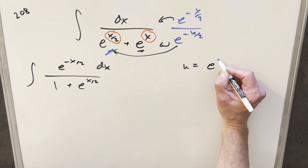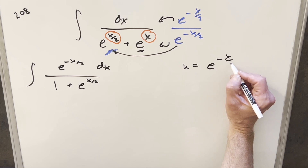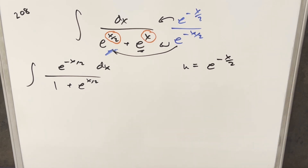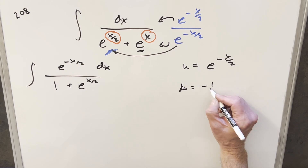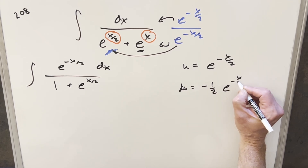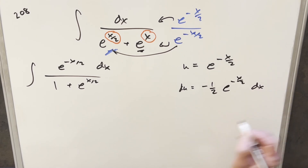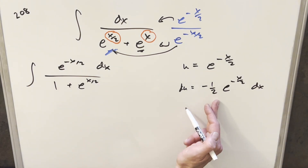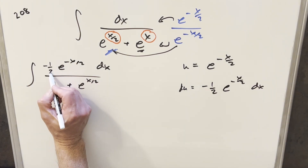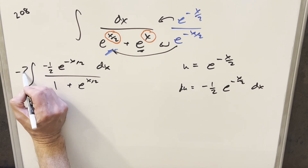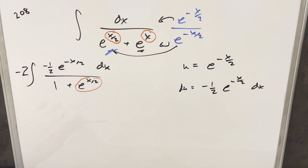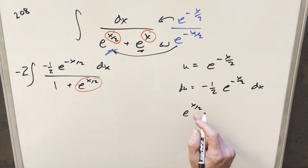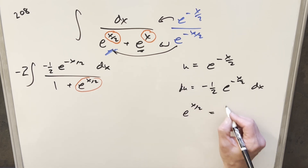For the u substitution, we'll substitute u for e to the minus x over 2. Taking the derivative, our du value is going to be minus one half times e to the minus x over 2 dx. In order to get this du expression in the numerator, I'll multiply by minus one half here, and to compensate, multiply by minus 2 out front. Also note that e to the x over 2 is just the reciprocal of u, so e to the x over 2 equals 1 over u.